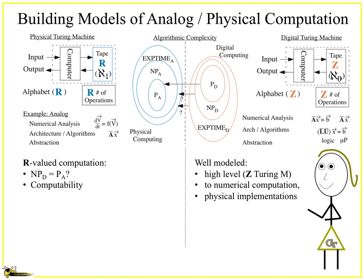This allows us to start talking about building models of analog physical computation — looking at a real-valued Turing machine versus an integer-valued Turing machine — and these have huge opportunities. The digital one has enormous theory, it's well modeled, and it's the basis of everything. But the models of the analog computing aspects show there are opportunities we hadn't thought about, or maybe had only hoped for over evening beverages, like all of the NP problems in the integer space — maybe they can be solved in polynomial time in the analog slash physical computing space.